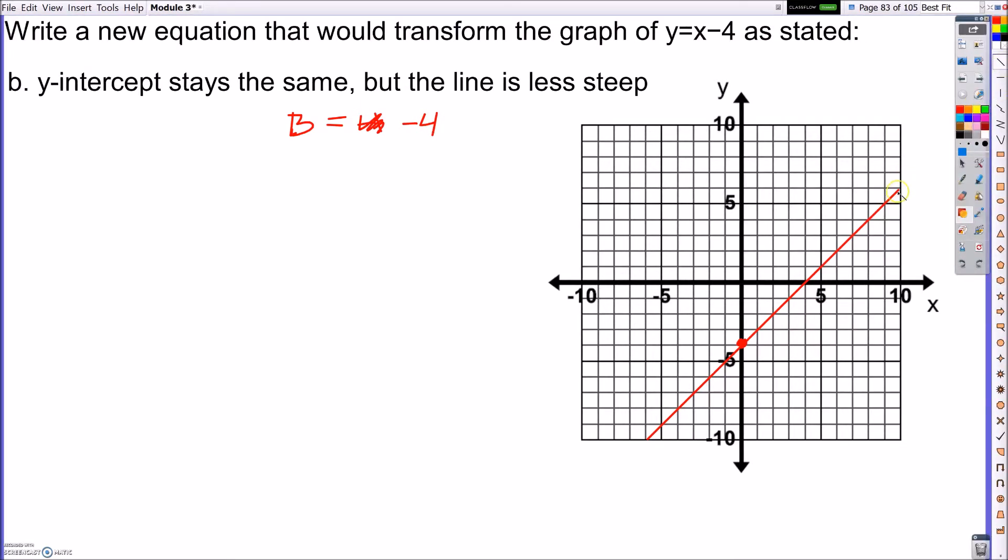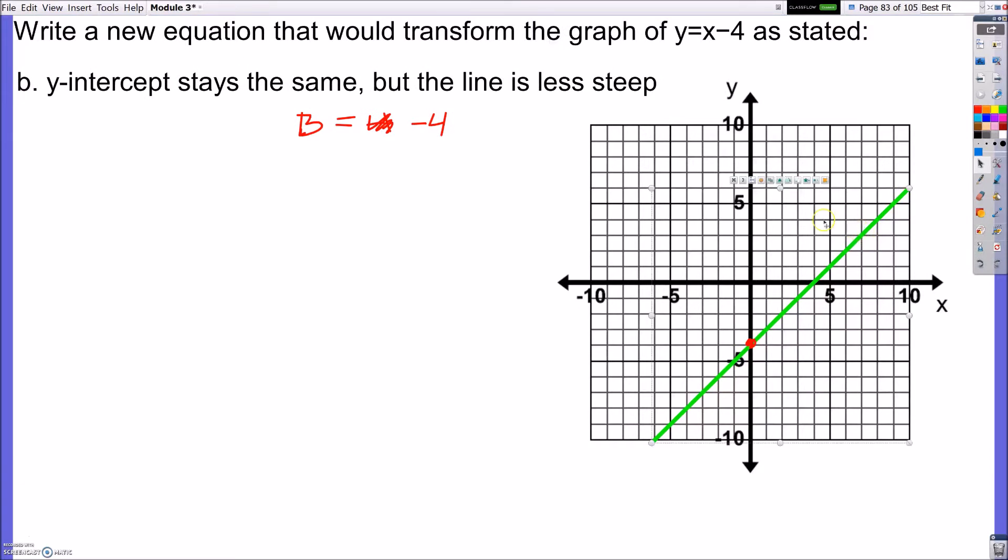So in order to get a slope that is less steep, what we want to do is, here's my line. I want to have it so right here stays the same, but it's going to be less steep. So it's kind of going to rotate down a little bit more. And if I rotate it, I want it to be less steep. So we've got to figure out what my rise over run is there. This would make it more steep. This would make it less steep.